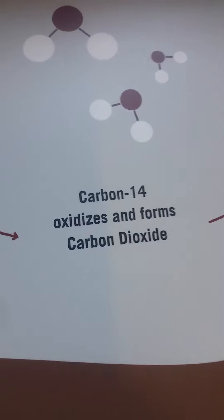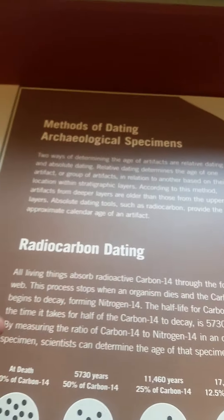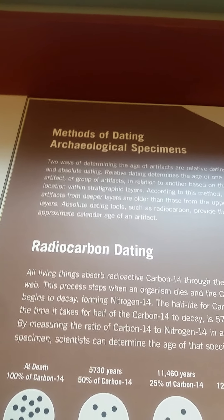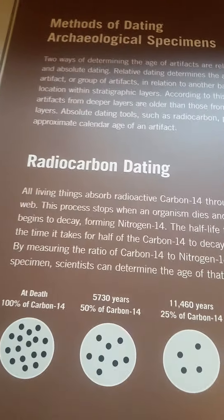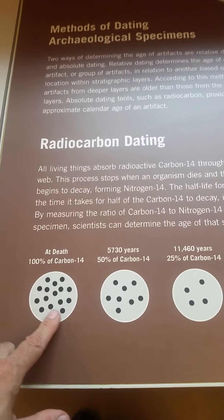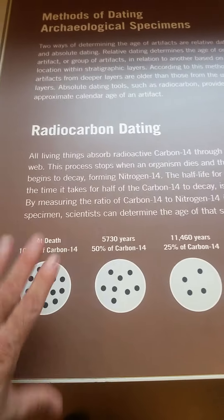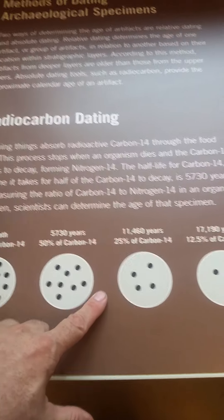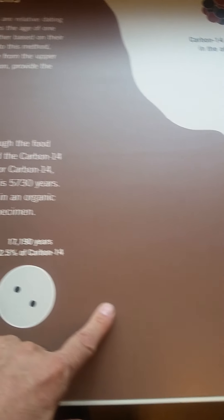I'd like to talk about the problems with carbon-14 dating. The methods of dating archaeological specimens almost always use carbon-14, and there are inherent problems with it. At death, there's 100% carbon-14 in the specimen. Every 5,730 years, 50% of the carbon-14 leaves the specimen, and it's only good for about 55,000 years.